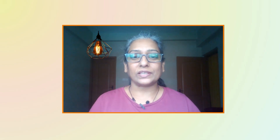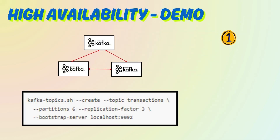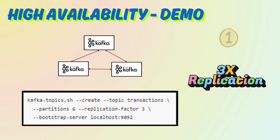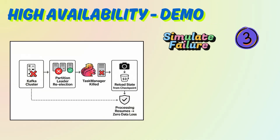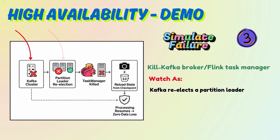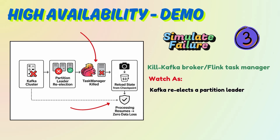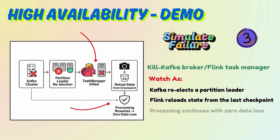Let's build a quick high-availability pipeline using Kafka and Flink. Step one: set up a Kafka topic with three-times replication. Step two: enable Flink checkpointing. Step three: simulate failure — kill one Kafka broker, observe leader re-election and continued consumption; kill a Flink task manager and Flink reassigns the task, with the job continuing from the last checkpoint. That's real-world high availability.